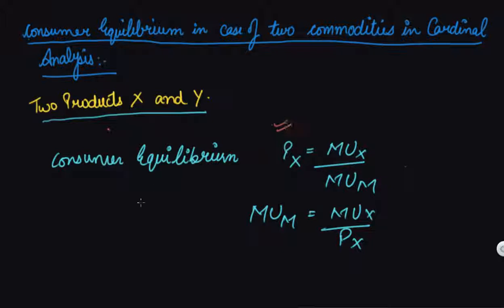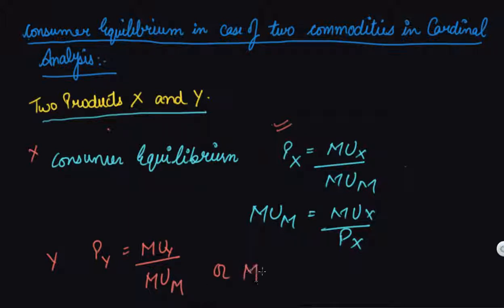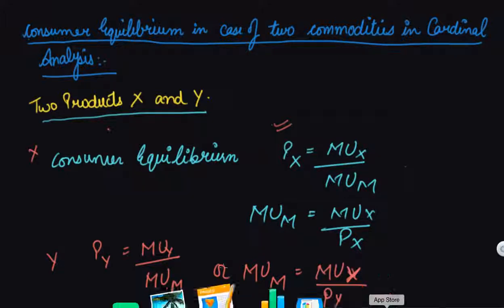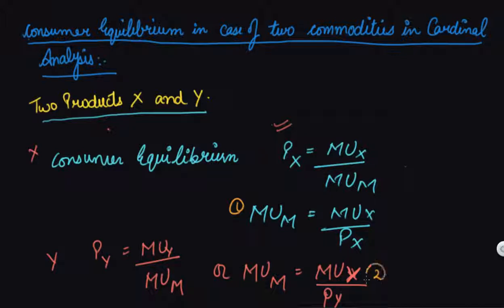This same logic applies in the two-commodity analysis. In the case of commodity X we have MU_M = MU_x / P_x. Now let's see the case of Y: price of Y equals marginal utility of Y divided by marginal utility of M, or MU_M equals MU_y divided by P_y. This gives us our two equations. Taking the common factor out, we can combine them.